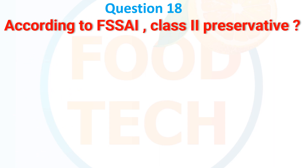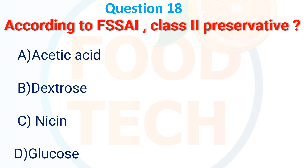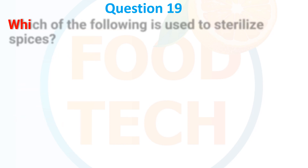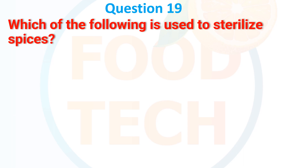According to FPO, Class II Preservatives include: A. Acetic acid, B. Diacetate, C. Nisin, D. Glucose. The answer is C. Nisin.